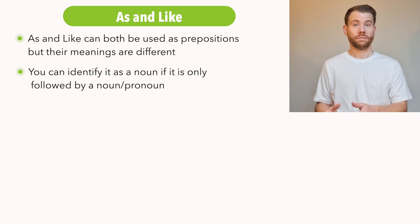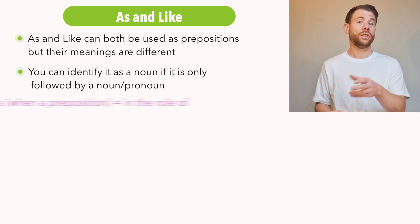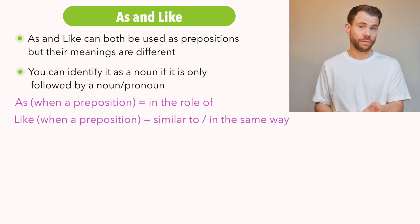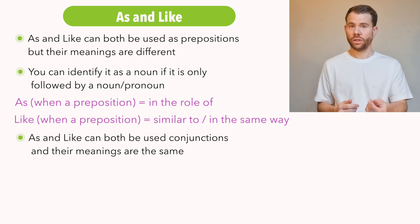When as is a preposition and it's followed by a noun, it means in the role of. And like when it's a preposition, so followed by a noun or pronoun, it means similar to or in the same way. But both of these words, as and like, can also be used as conjunctions.